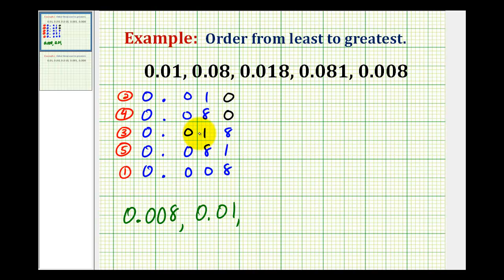And then we had 0.018, followed by 0.08, and 0.081. So we had the least decimal here all the way to the greatest decimal here.